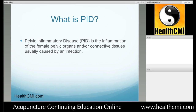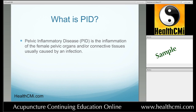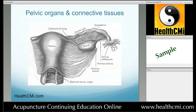PID is the inflammation of the pelvic organs and/or the connective tissues, and it's usually caused by an infection. Let's take a look at some of the surrounding areas of the pelvic organs and connective tissues. Notice the broad ligaments — there's a huge area between the uterus and the ovary where you have that sweeping broad ligament, and that can be infected in a multiplicity of ways.